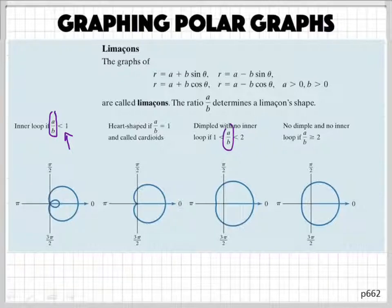If the ratio of A and B is between 1 and 2, then you're going to have a dimple. If your ratio is greater than 2, then it starts flattening out and you almost get to a circle.